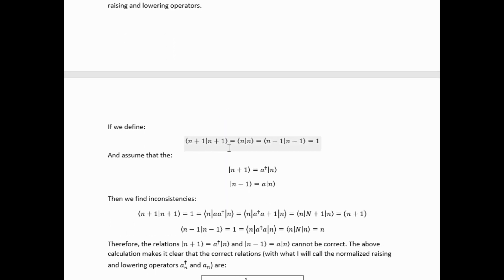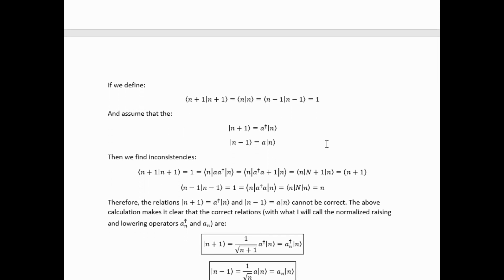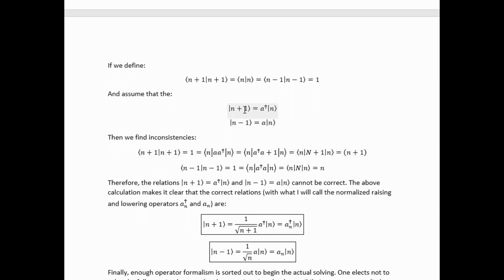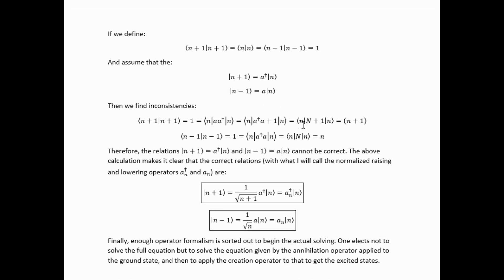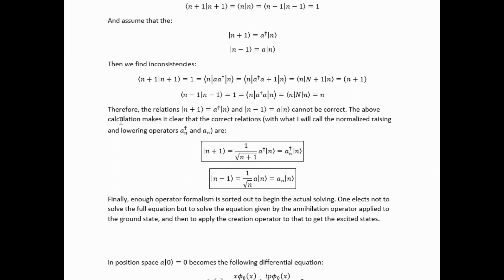So if we start by insisting that everything is normalized to unity, so these three equalities, and then we start by trying to define states like this, then we find an inconsistency. If we actually directly calculate these out, we find that they don't equal one. So what we can do, what we have to do, is normalize.